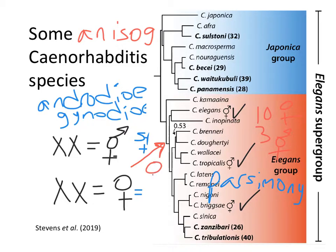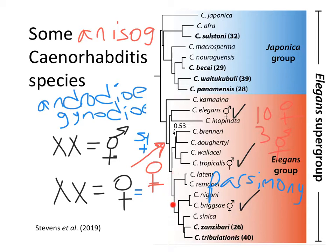It would not be surprising if you found three close relatives being hermaphrodites — for example, at the bottom of the tree we have C. sinica, C. zanzibaria, and C. tribulationis. If those three were all hermaphrodites, that would suggest one mutation in a common ancestor to those three. It's like thinking about mammals: we all have hair because the ancestor of all mammals had a mutation that made them develop hair. That's why we all have hair.